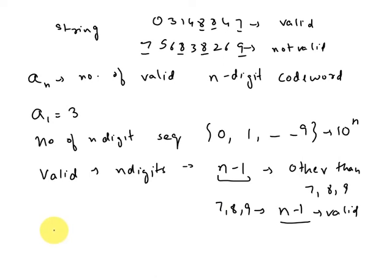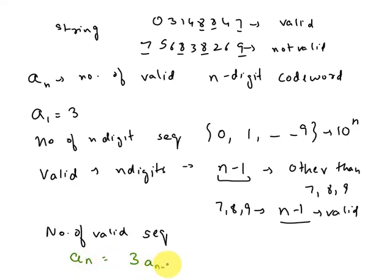Therefore, the number of valid sequences is given by the recurrence relation: a(n) = 7·a(n-1) + 3·(10^(n-1) - a(n-1)), which simplifies to a(n) = 3·a(n-1) + 10^(n-1) - a(n-1). Hope you find the video useful, thank you.